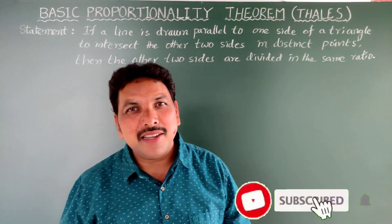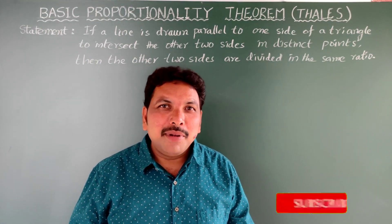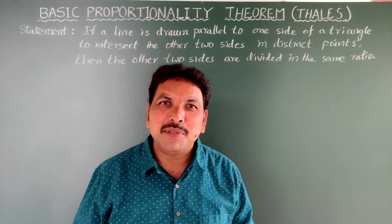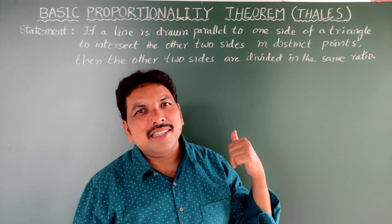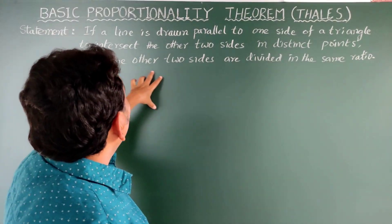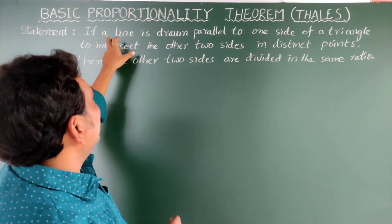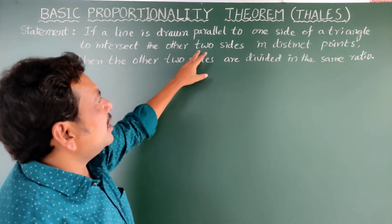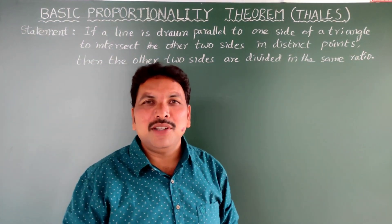Before going to the topic, please subscribe to my Maths channel if you haven't yet. Now, what is the statement of the Basic Proportionality Theorem? If a line is drawn parallel to one side of a triangle to intersect the other two sides in distinct points, then the other two sides are divided in the same ratio.